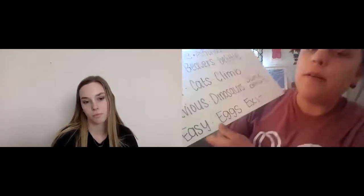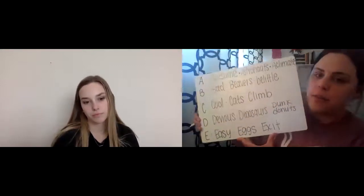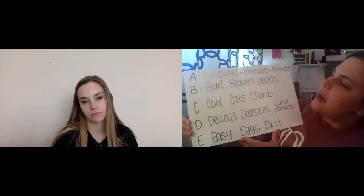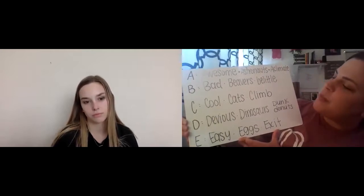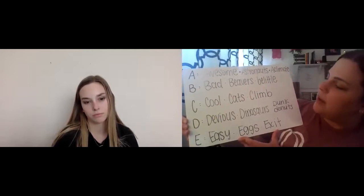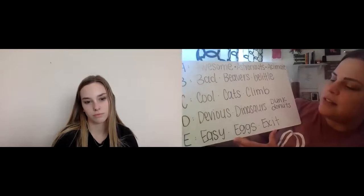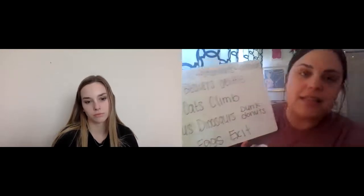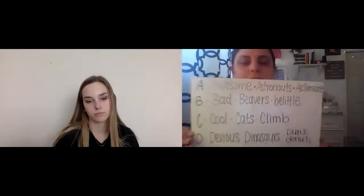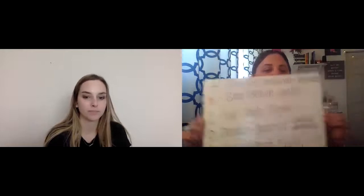So my friends, when we read our alphabet alliteration poem, it says: Awesome astronauts acclimate. Bad beavers belittle. Cool cats climb. Devious dinosaurs dunk donuts. Easy eggs exit. And if I were to read this to pretty much anybody, I think they would go, huh? It doesn't make a lot of sense, it doesn't have one topic — it's just really silly.